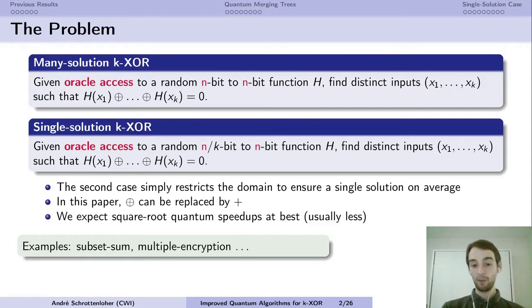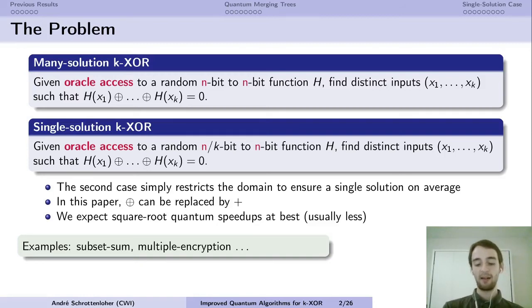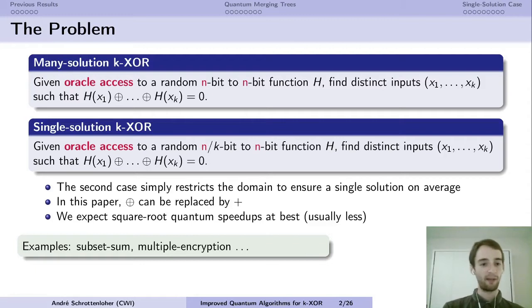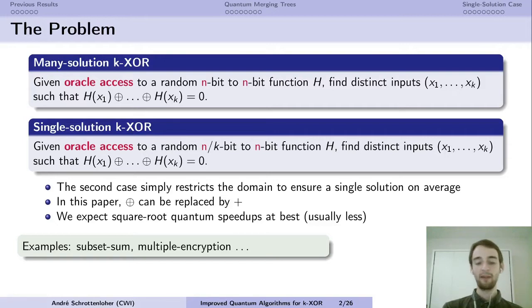This is a difficult problem, and in the quantum setting it will remain so — we expect at best a quantum speedup, and usually a bit less than that. There are many problems that reduce to k-XOR; for example, subset sum reduces to k-sum for any k. It can be seen as a prototype for many problems and appears often in cryptanalysis.